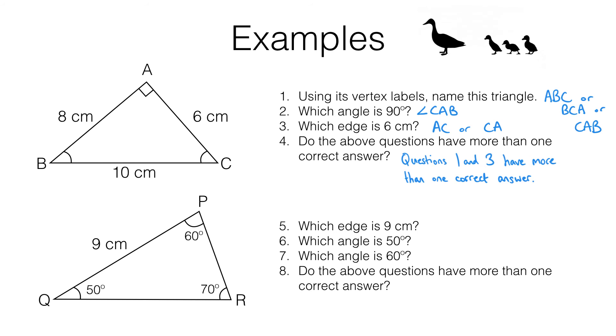Here's what you should have found. Question five, which edge is nine centimetres? Well, there were two possible answers you could have written. You don't need them both, you just need one. We can call this edge here, the nine centimetre one, PQ or QP.